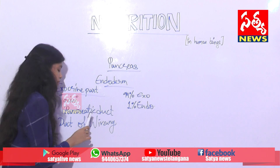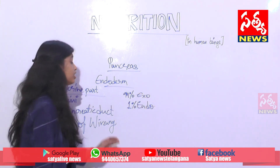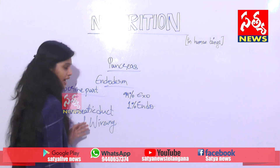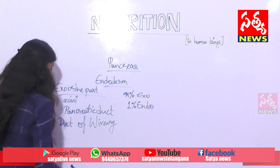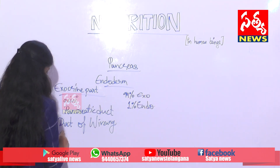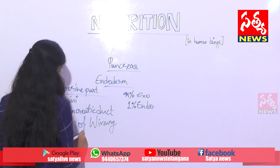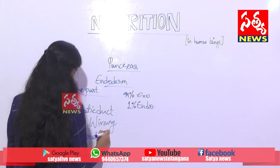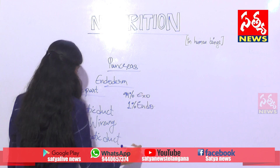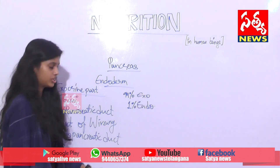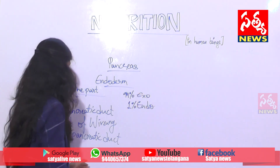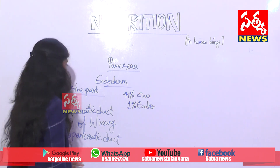From the pancreatic duct, the pancreatic juice joins with the common hepatopancreatic duct, and from there they reach the duodenum and help in digestion in the small intestine.